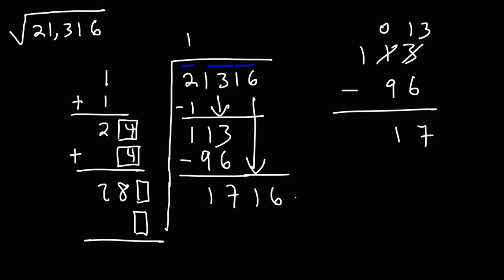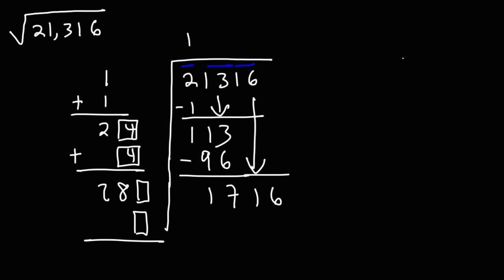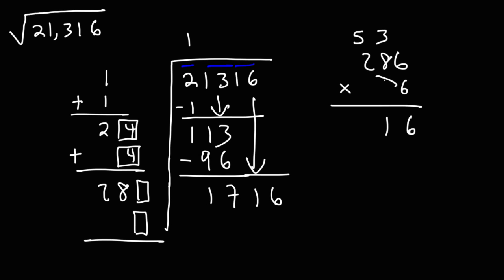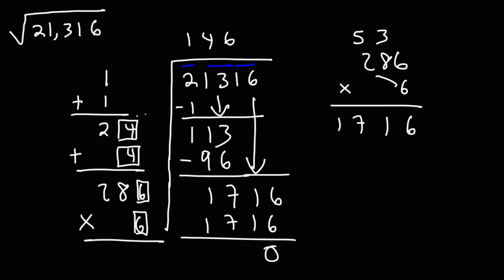280-something times something equals 1716. The fact that this ends in 6 suggests the digit might be 6. Also, rounding 28 to 30 and 171 to 180, we see 30 times 6 is 180, so 6 is a good number. 286 times 6: 6 times 6 is 36, carry 3; 8 times 6 is 48, plus 3 is 51, carry 5; 2 times 6 is 12, plus 5, that's 1716. So the digit is 6. The square root of 21,316 is 146.